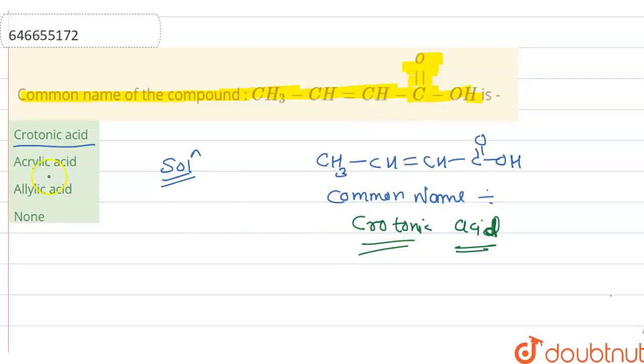Crotonic acid, acrylic acid, allylic acid - allylic acid having the situation like this: CH double bond CH CH2. This is the allylic group.